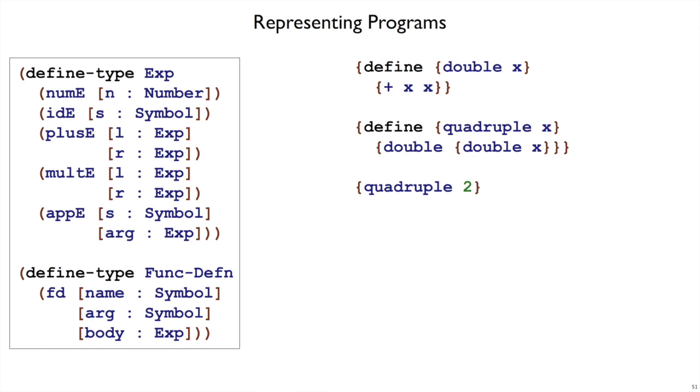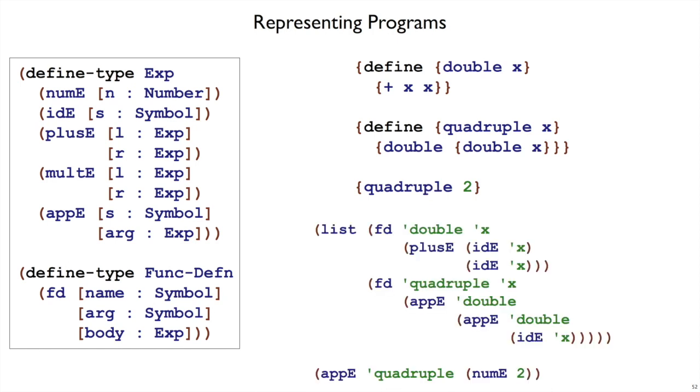Here's a complete program that has two function definitions and finally expression. So we've been looking at just expressions or just definitions, but when we have a whole program in curly, we need to put the definitions together with the expressions. So the way we'll represent all of this is with two parts. We will keep a list of function definitions.